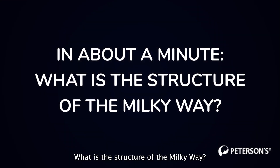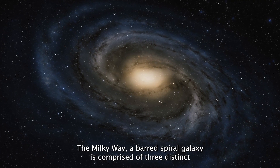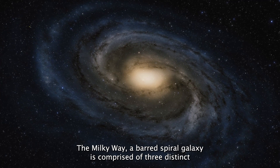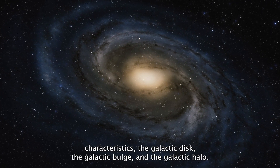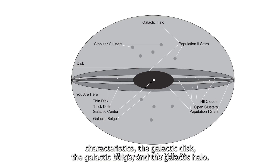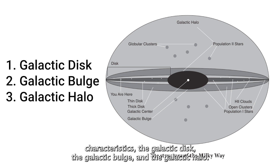What is the structure of the Milky Way? The Milky Way, a barred spiral galaxy, is comprised of three distinct characteristics – the galactic disk, the galactic bulge, and the galactic halo.